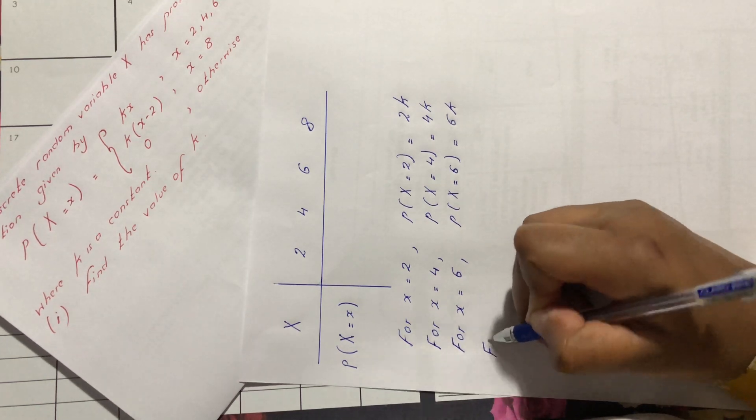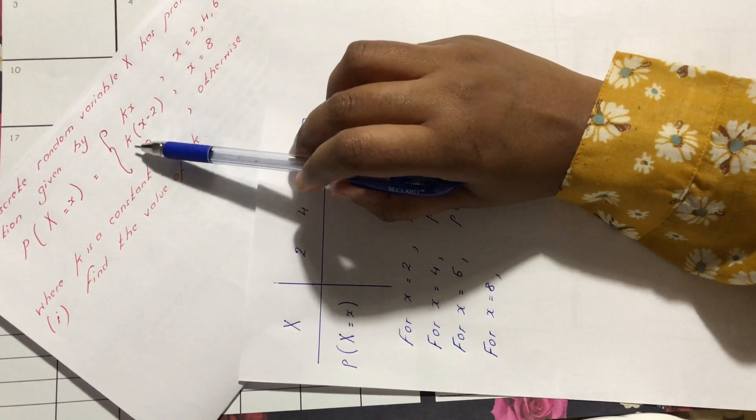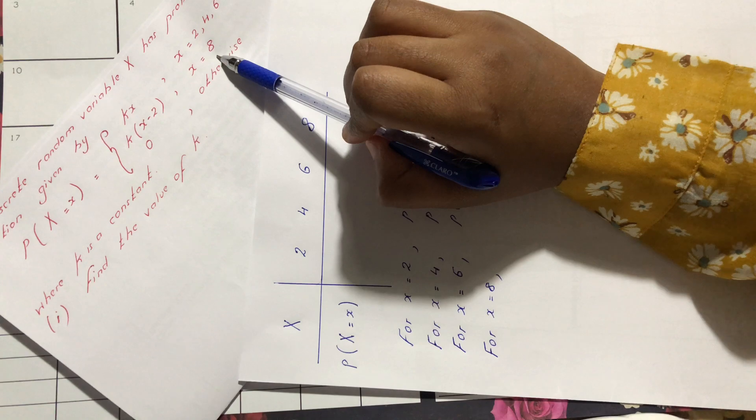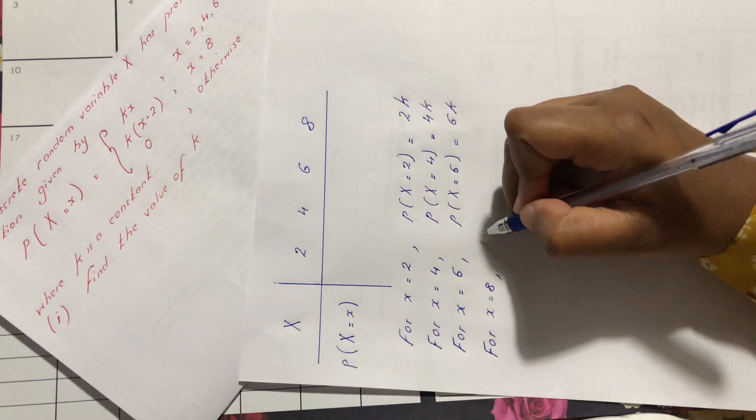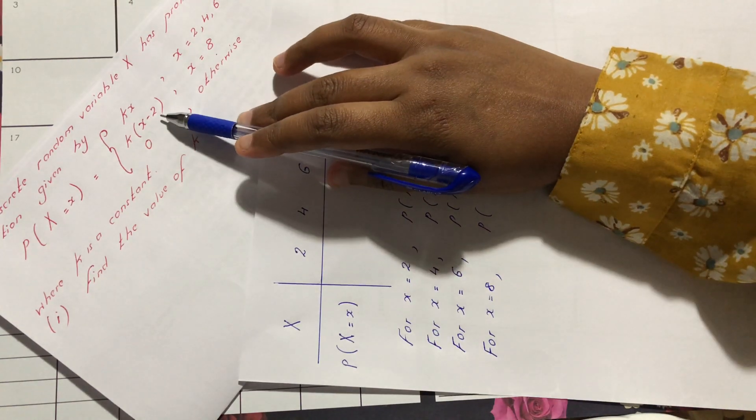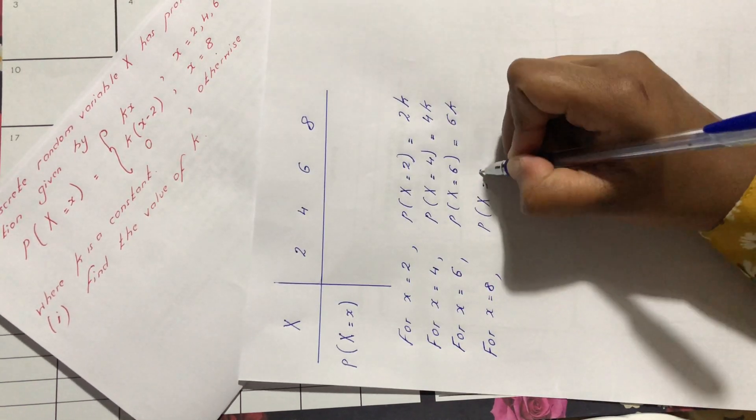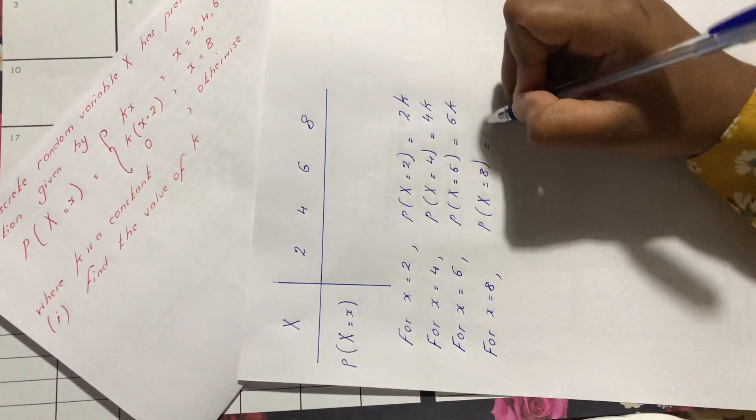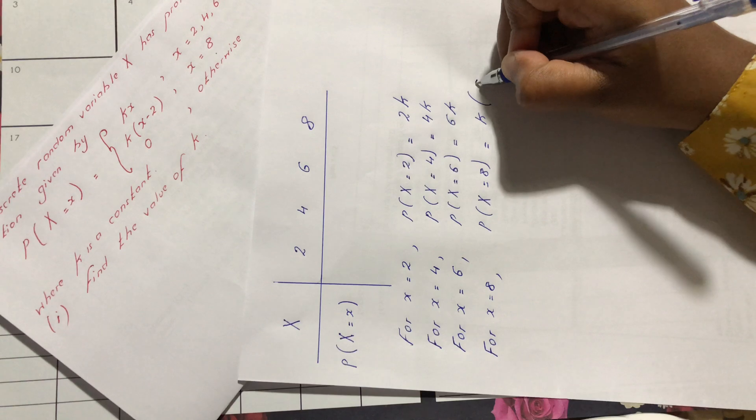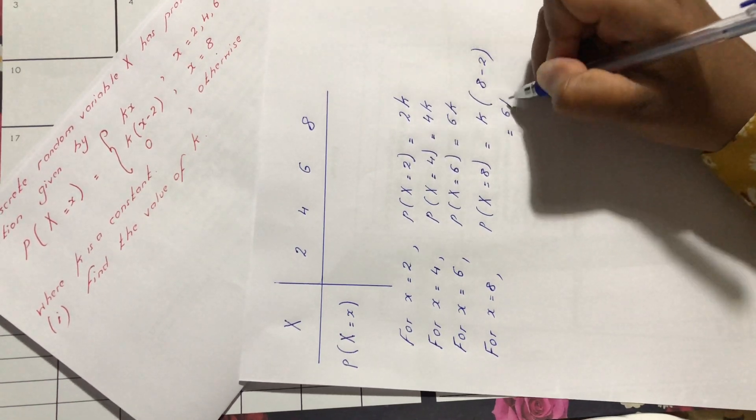Now, for x equals 8, we can see that the second function, k(x-2), is valid for x equals 8 only. So we are going to replace in this function. x equals 8, we have k times (8 minus 2), so we have 6k.